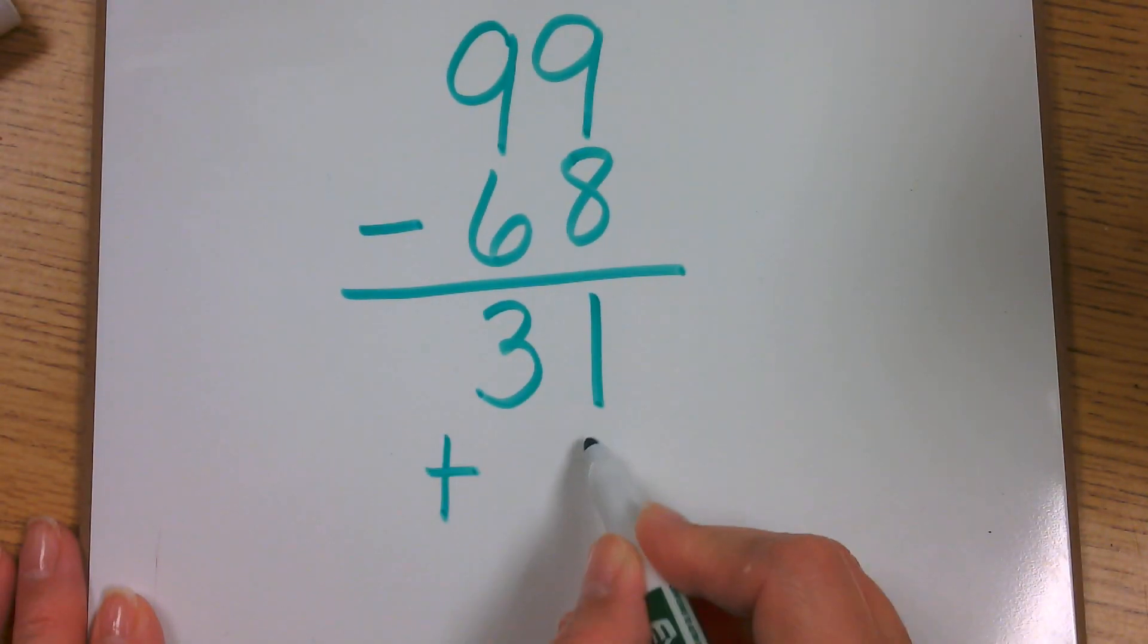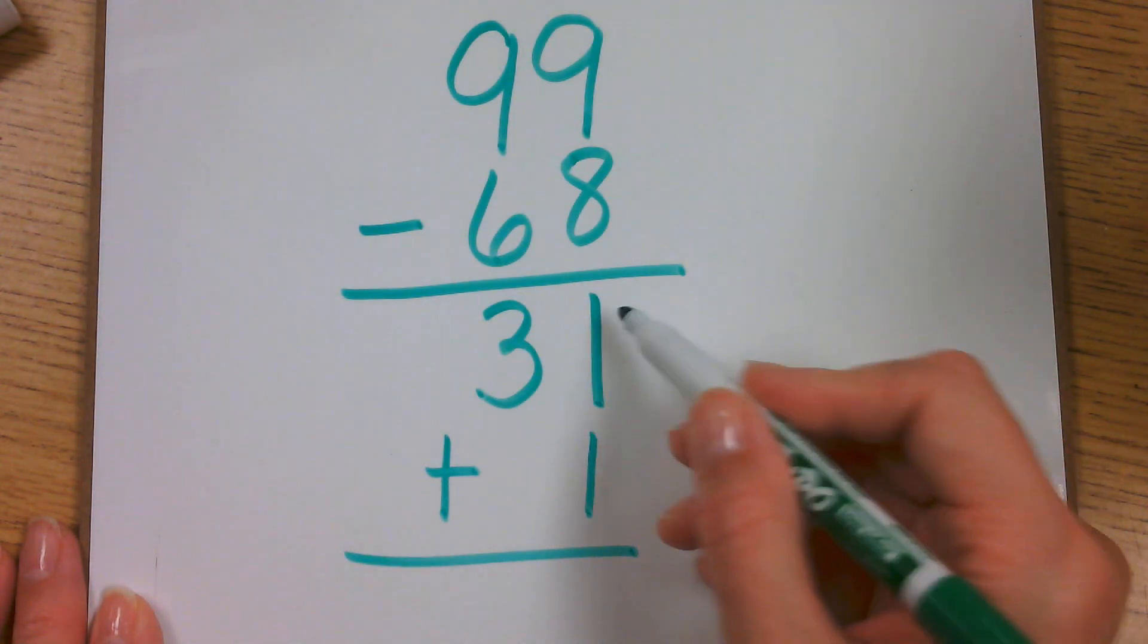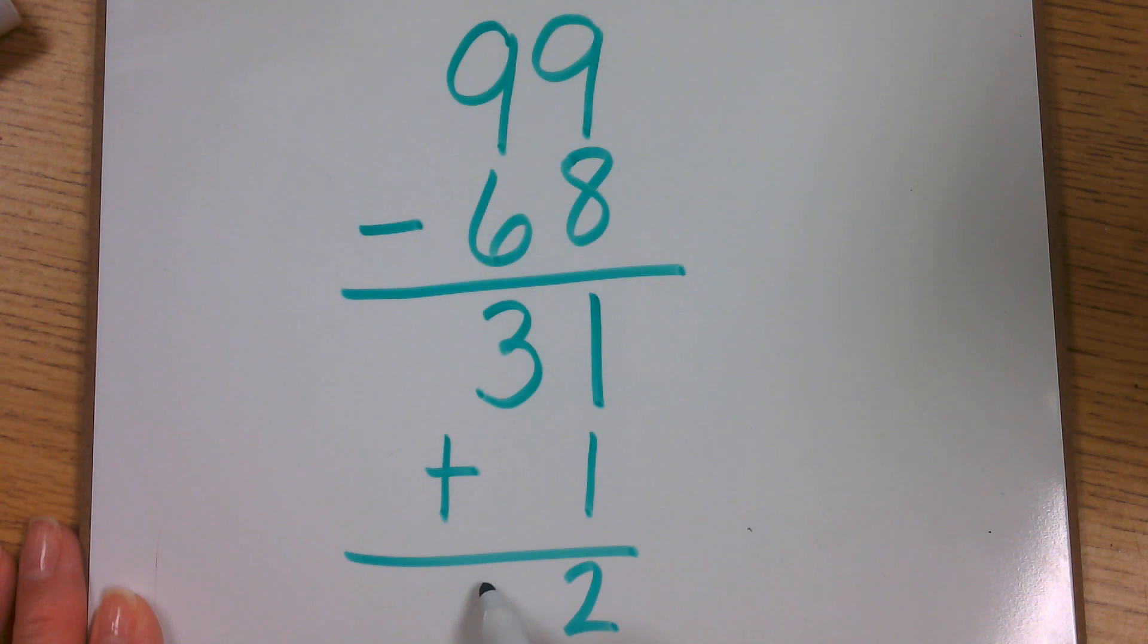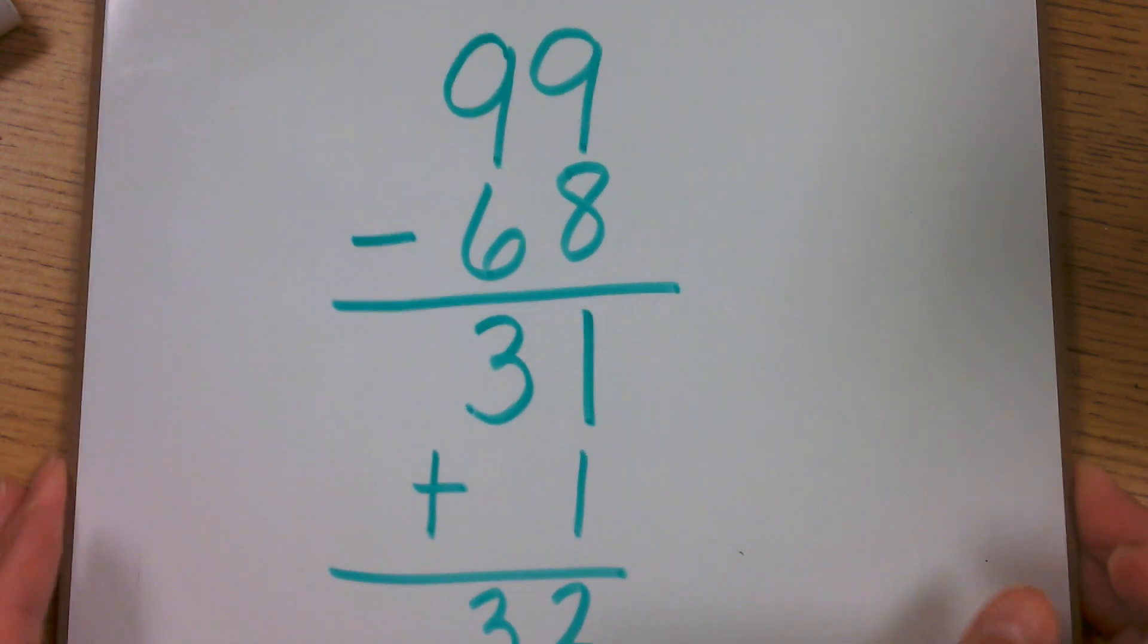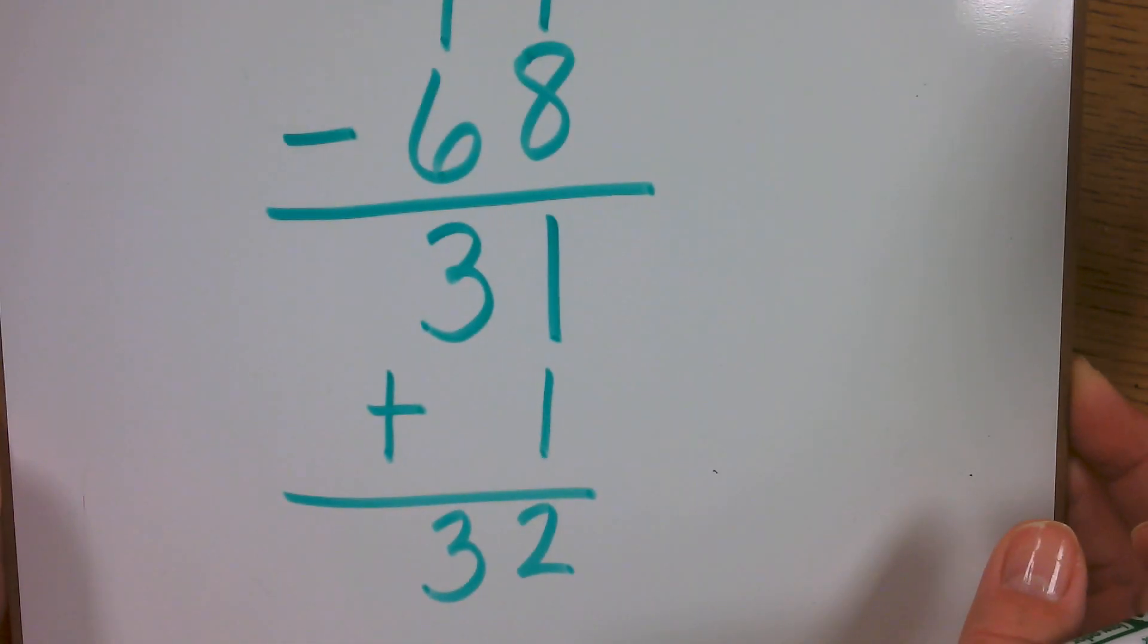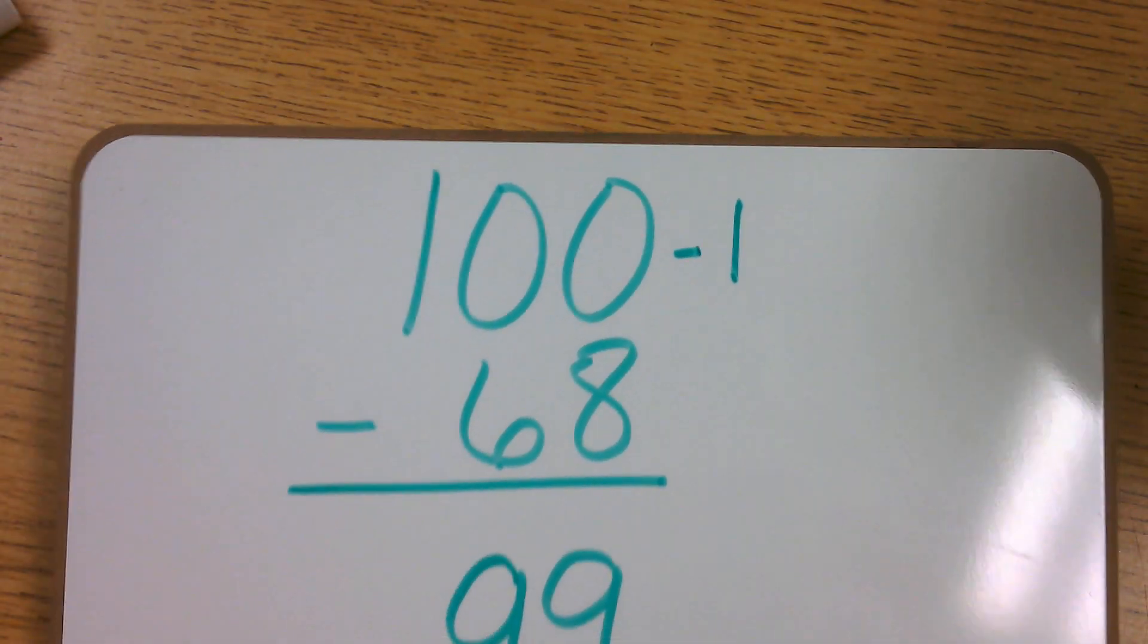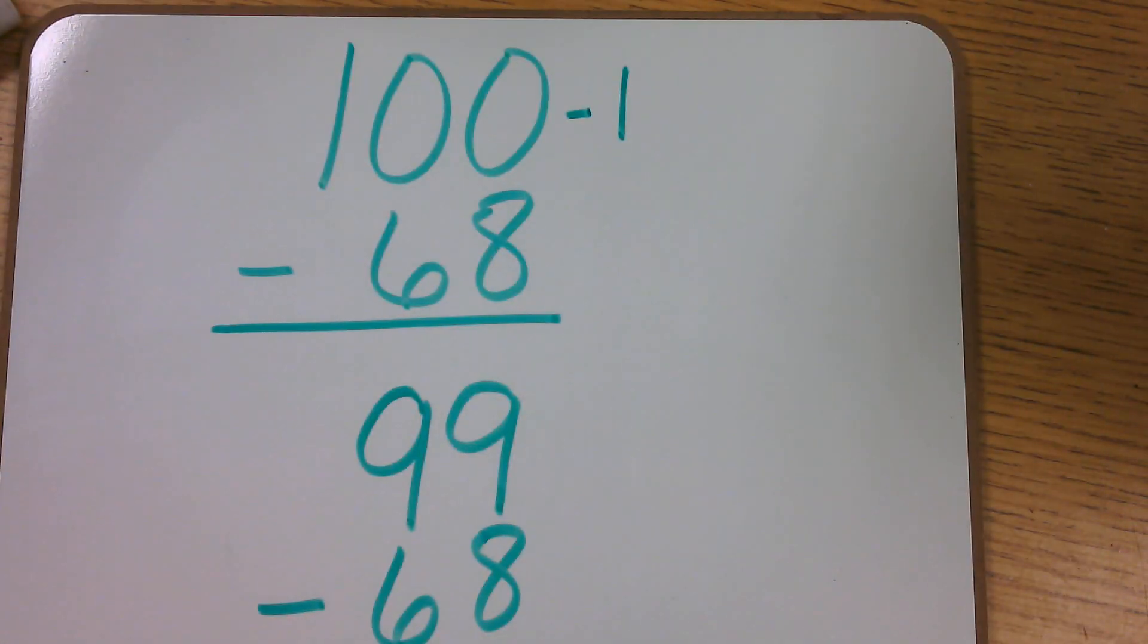So 31 plus 1. 1 plus 1 is 2. And 3 plus 0 is 3. So then my answer is 32 to the problem of 100 minus 68. I hope that helps. Have a great day.